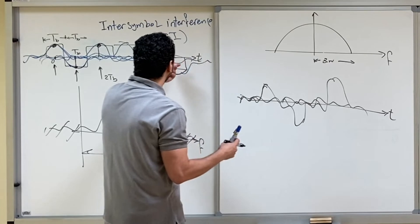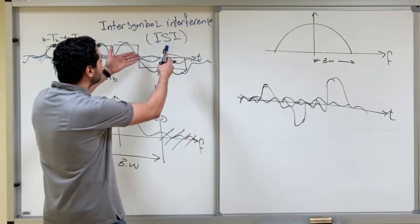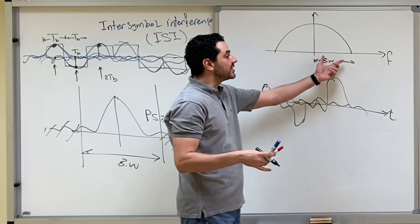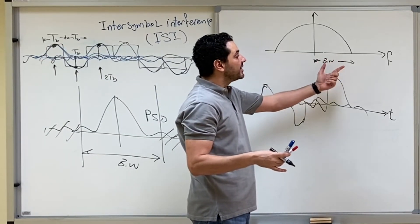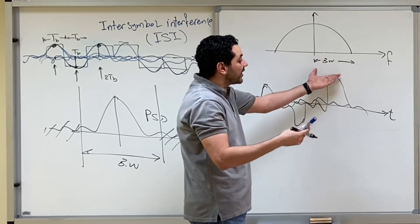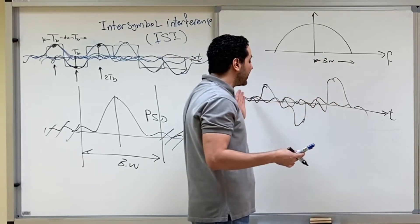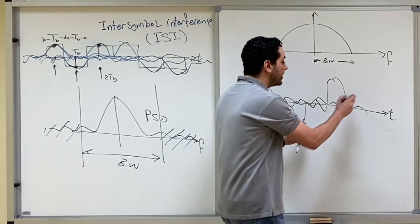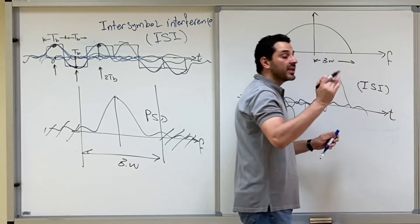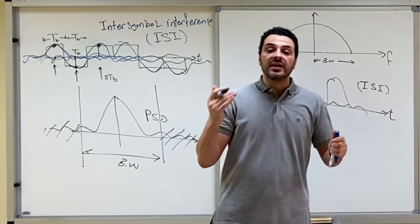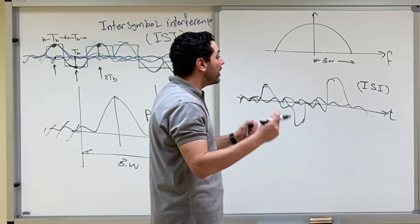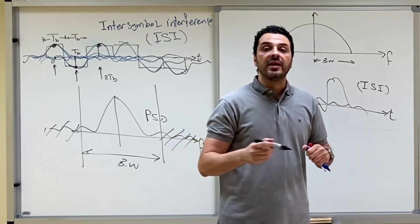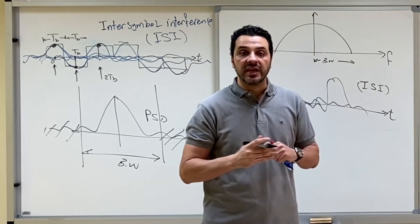So whether you start by designing a time-limited pulse or a frequency-limited pulse, you end up with inter-symbol interference between the pulses. In the first case you start time-limited but cut the bandwidth, so it becomes time-unlimited and causes ISI. In the second case you start frequency-limited, but that makes the pulses time-unlimited and they interfere with each other. In both cases there will be ISI, and the receiver will make many errors in decoding the bits.